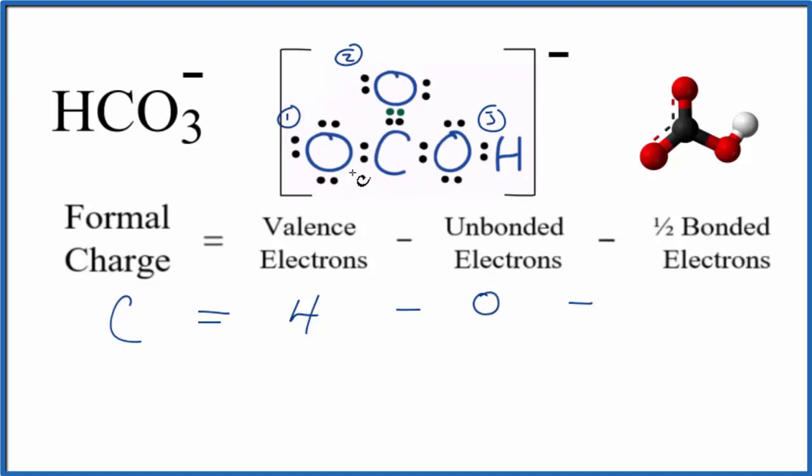And then one half of the bonded: two, four, six, eight, so we're going to put eight over two, that gives us four. Four minus four equals zero, so the formal charge on the carbon here is zero.